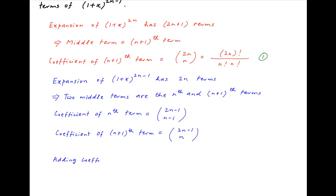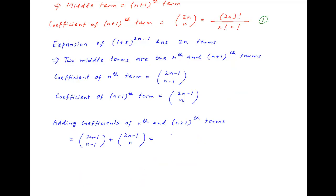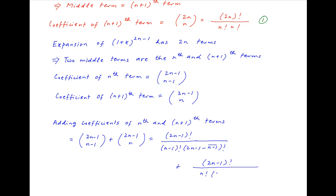Now, the sum of the coefficients of the two middle terms is equal to C(2n-1, n-1) plus C(2n-1, n). This is equal to (2n-1)! divided by n! times (2n-1-(n-1))! plus (2n-1)! divided by n! times (2n-1-n)!.